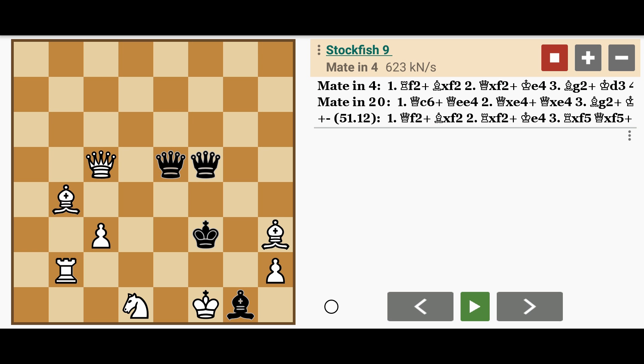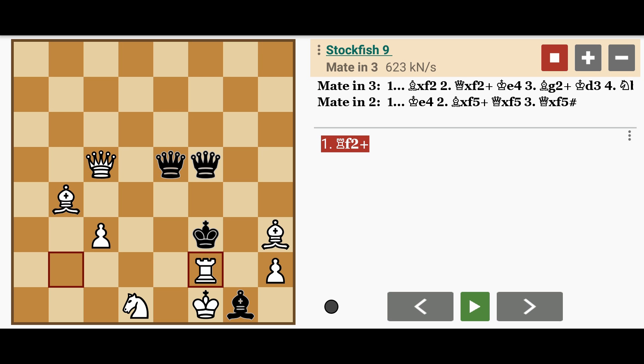The engine also says that there's a mate in 20 moves. But we are only interested in the shortest, most efficient solution. And it goes like this, rook to f2, check.